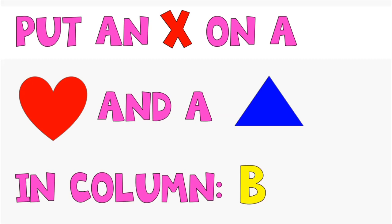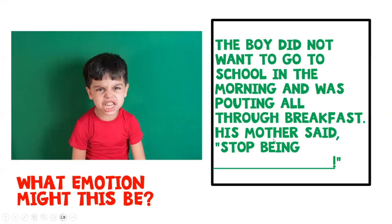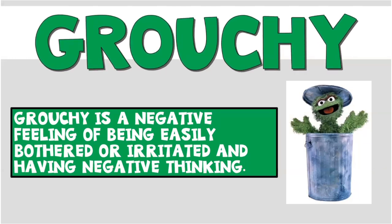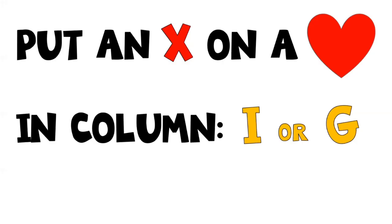Put an X on a heart and a triangle in column B. The boy did not want to go to school in the morning and was pouting all through breakfast. His mother said, stop being grouchy. Grouchy is a negative feeling of being easily bothered or irritated and having negative thinking — just think of Oscar the Grouch, he's always grouchy. Put an X on a heart in column I or G.